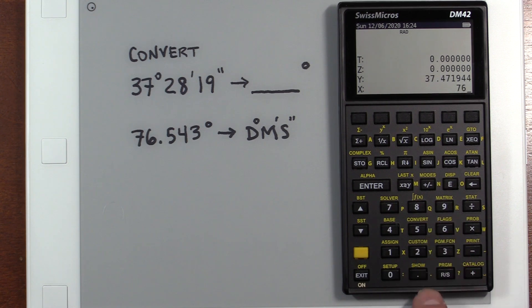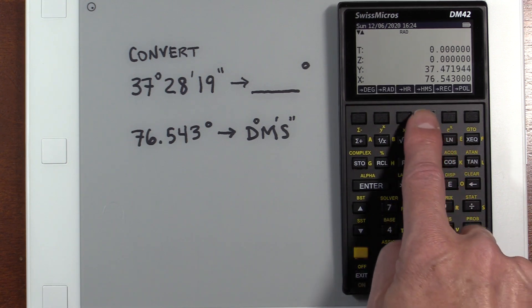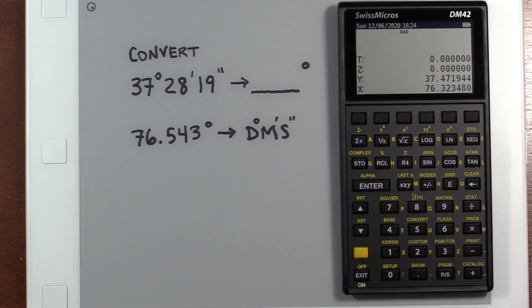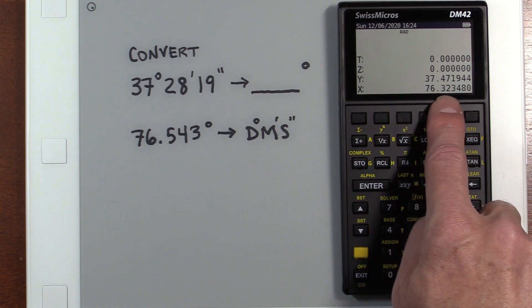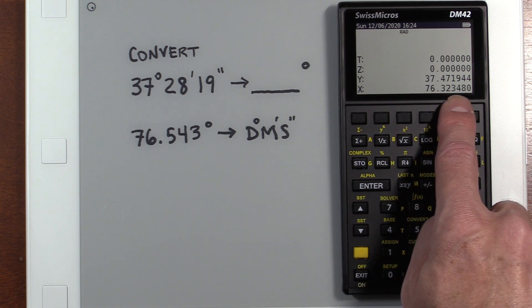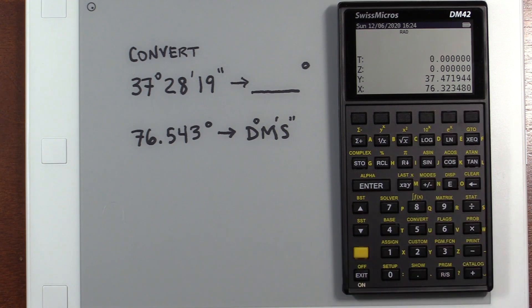If we want to go the other way, 76 point, 5, 4, 3 degrees. If we want to convert to degrees, minute, seconds, we would have 76 degrees, 0.3, or sorry, 76 degrees, 32 minutes, and 34.8 seconds. Really simple to use.